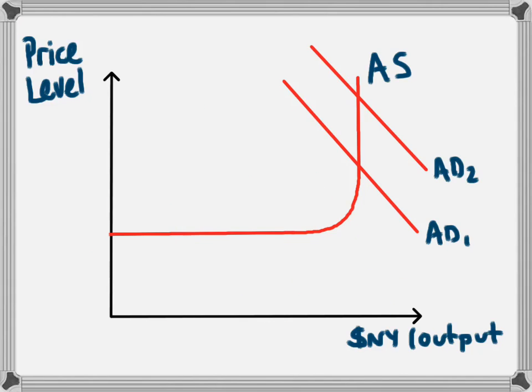If we were at the highest levels of aggregate supply, the level of aggregate demand, when it increases from AD1 to AD2, won't lead to any increase in national income. The reason for that is that businesses physically cannot produce any more than what they already are because all resources are being used. And this is when we say the economy is at full employment.